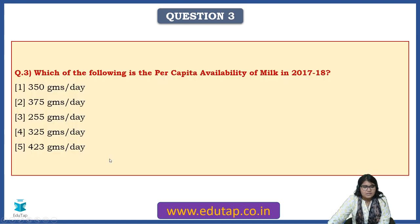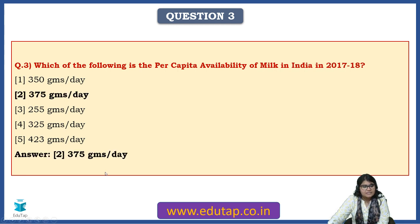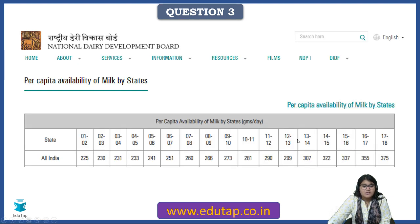Third question: what is the per capita availability of milk in 2017-18? This is the latest data available as per the census. The answer is 375 grams per day. This is a screenshot taken from the National Dairy Development Board's website, where per capita availability of milk by states is given — and the All India figure for 2017-18 is 375 grams per day. This can be a probable exam question.